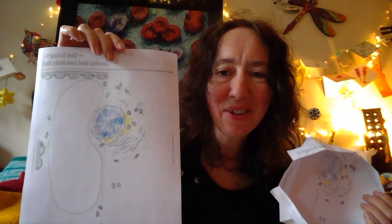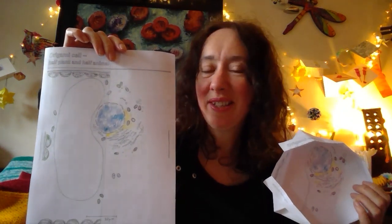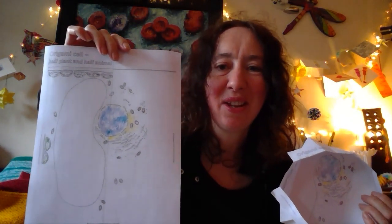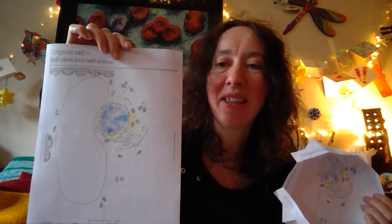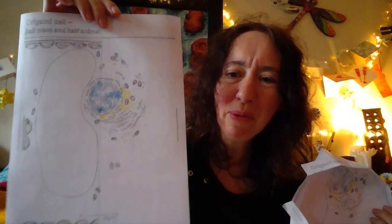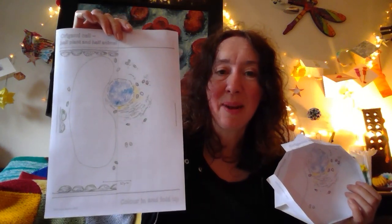Find out about the little structures inside a cell. One side is plant and one side is human, and maybe you can compare the two. Maybe do a bit more colouring than I've done, but that's the idea, colour it in.